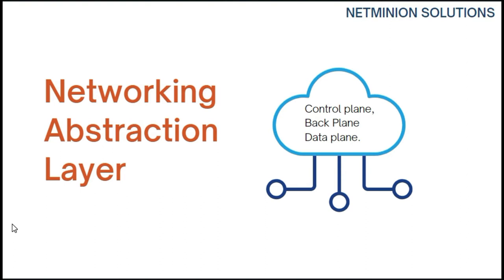When talking about the back plane, consider an entry-level switch like the 2960, which has only a single port ASIC internally and thus does not require a fabric or back plane. However, when talking about large modular core switches — like the Nexus 7K or 9K series — a switch fabric interconnects the port ASICs of a switch to allow transmission of data and control signaling.